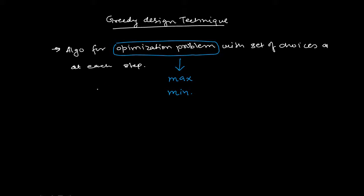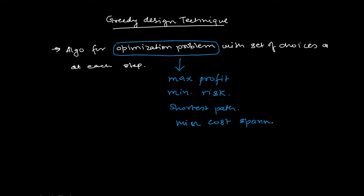For example, if a project manager wants to pick jobs with some profits, it is the responsibility of the optimization problem to maximize the profit, or minimize the risk in the organization, or to find the shortest path with the minimum cost, or the minimum cost spanning tree. These types of problems have the objective of minimizing or maximizing something, so optimization problems are problems with certain objectives of maximizing or minimizing a certain attribute or constraint.